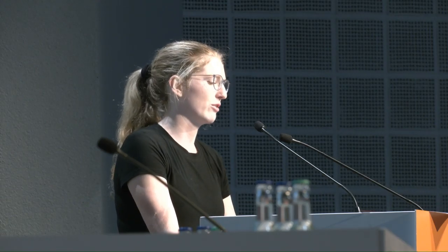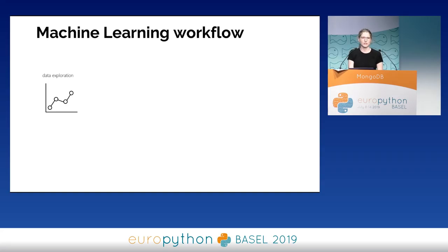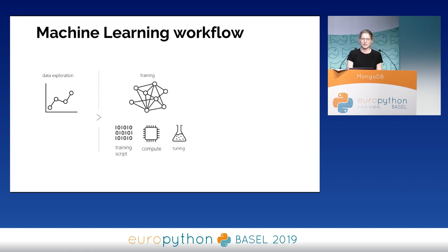Taking a step back to look at the general machine learning workflow: you start with data exploration. The data is where all the power for your deep learning network comes from — it's the most important part of the process. This involves finding a dataset, transforming it into the format you need, cleaning any data, and running visualizations to understand the basic attributes. Once you have a sense of that, you move into training, where you actually develop your algorithm. The three main concepts are training script, compute, and tuning.